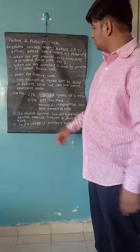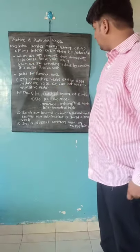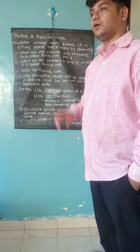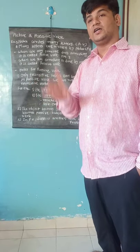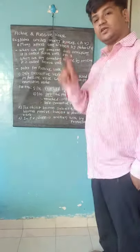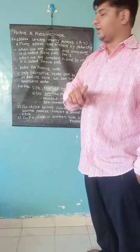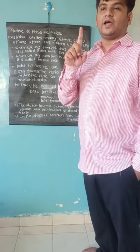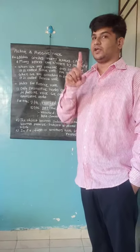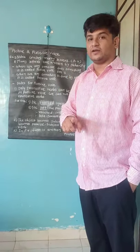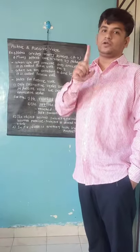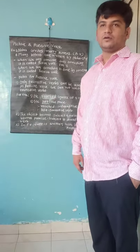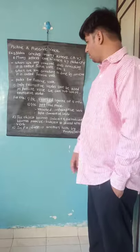When someone does something, it is active voice. When something is done by someone, it is passive voice. So: active voice means someone does something, and passive voice means something is done by someone. Now look at the notes on how to make passive voice from active voice.